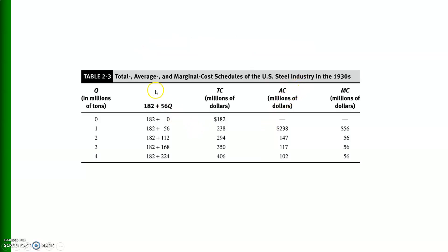This table shows the total, average, and marginal cost schedule of the US steel industry in the 1930s. The first column shows units of output, the second shows the cost function — which is a straight line here. Usually the total cost function is cubic, but here it is linear. Average cost is shown in million dollars and marginal cost in million dollars. Since the total cost curve is a straight line and its slope is constant, marginal cost stays constant at 56 dollars.